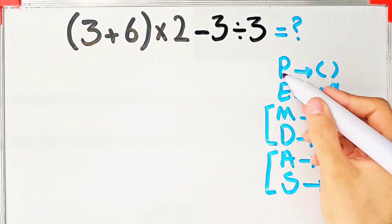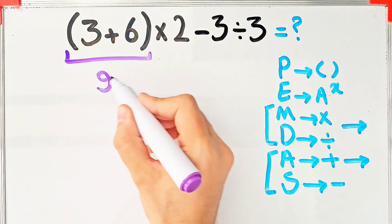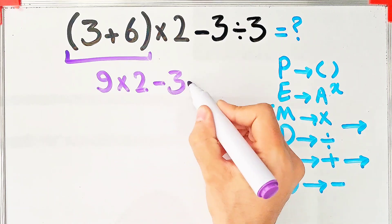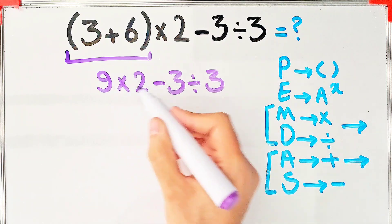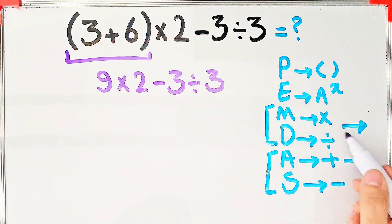According to the PEMDAS rule, first we simplify the parentheses: 3+6 equals 9. 9×2-3 then divided by 3. Now we have multiplication, subtraction, and division. Because we have multiplication and division, we start from the left and simplify.